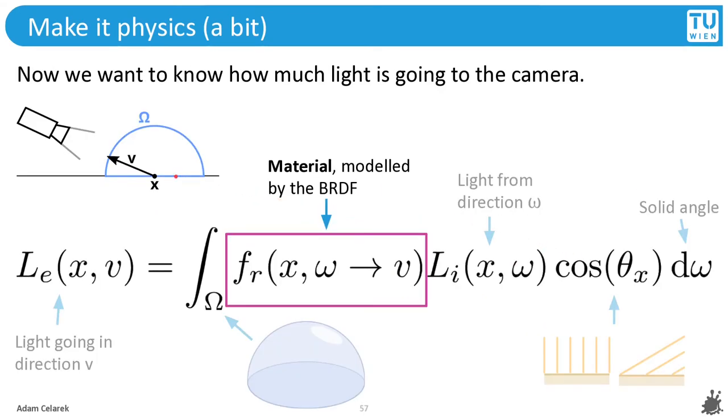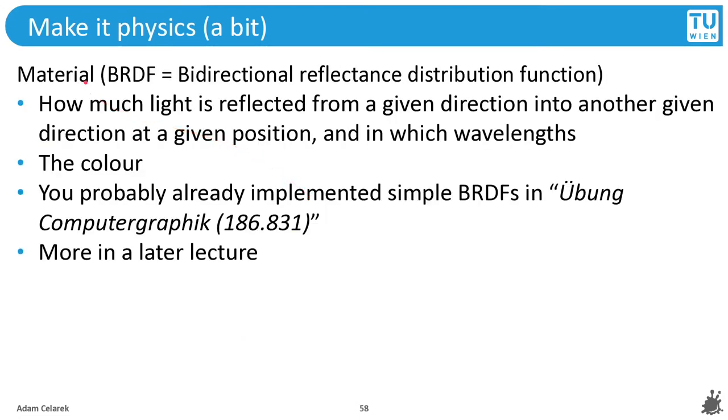However, it doesn't tell us how much light is directed towards the camera. The material in point x is important for that. If the material is completely black, it will absorb all of the light and nothing will go to the camera. The material is modeled by the BRDF. The BRDF means bidirectional reflectance distribution function. It tells us how much light is reflected from a given direction into another given direction at a given position and in which wavelengths. So the wavelengths basically means the color. You probably implemented some simple BRDFs in one of the previous courses, and we will cover that in more detail in later lectures.